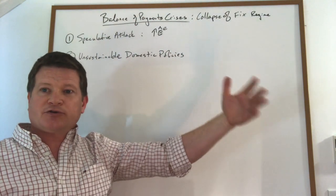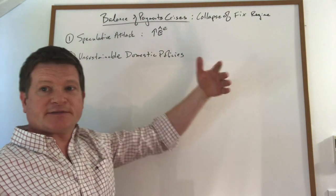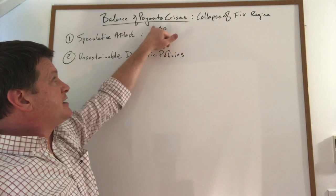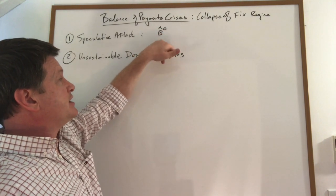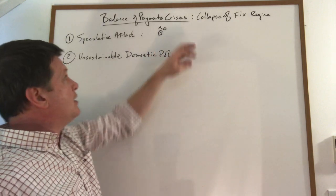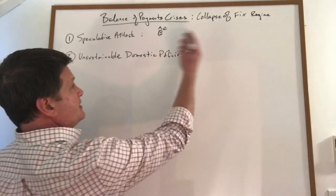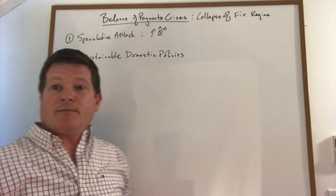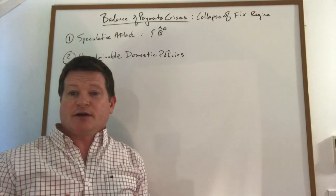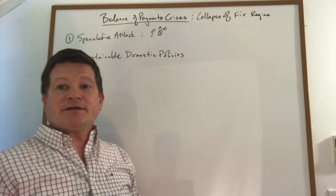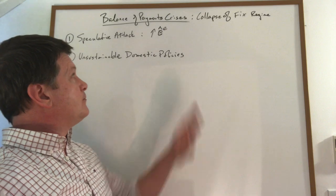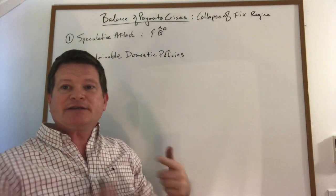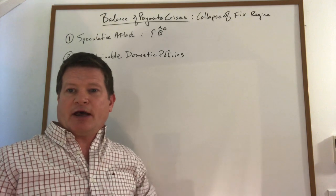When the regime is credible and nobody is expecting a collapse, the expectation of a change in the exchange rate is zero. But as you get near the end of the regime, this always starts to go up because people can see the thing is going to collapse. When that starts to go up, we'll find that it shifts the curve in the forex market, hastening the whole process and causing the collapse.